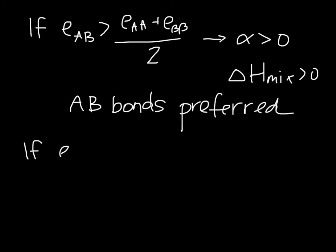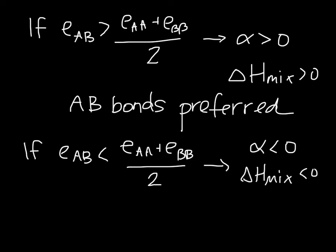On the other hand, if εAB is more negative or less than the average of this, then alpha is less than zero, delta H mix is less than zero. This should say AA and BB bonds are preferred. In this situation, AB bonds are preferred.